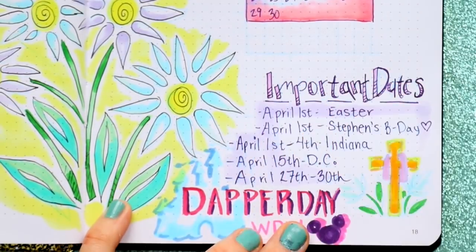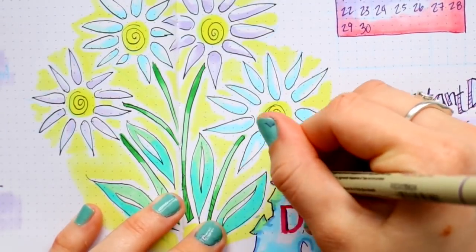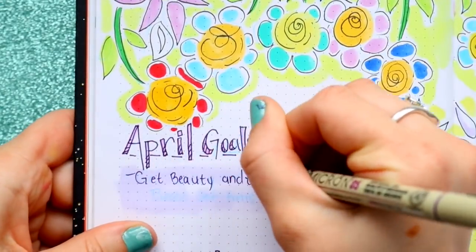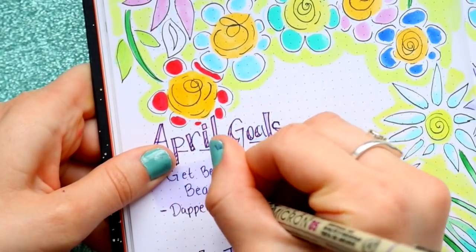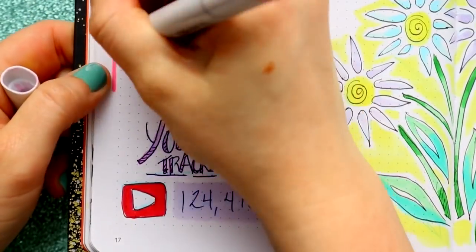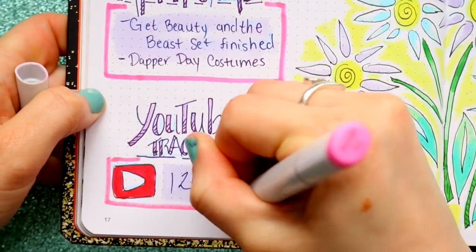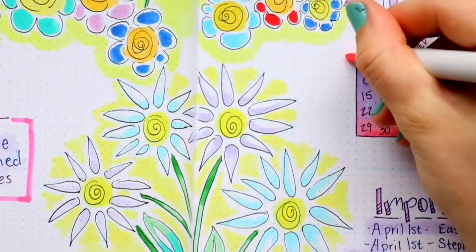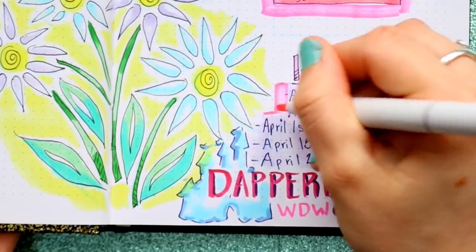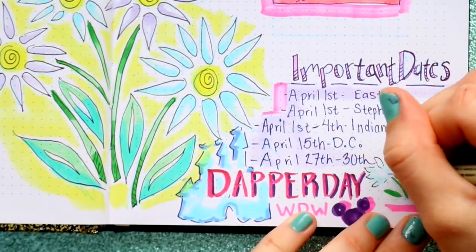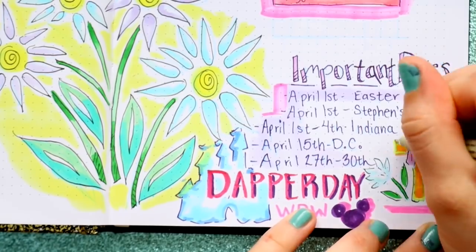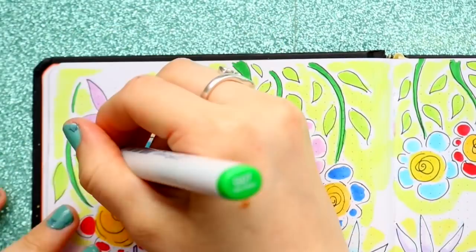I write down my important dates: April 1st is Easter and my boyfriend's birthday, then I'll be in Indiana for a while, then around the 15th I'll be in DC for that weekend, and then it's Dapper Day — the biggest weekend of April, or my spring semester.